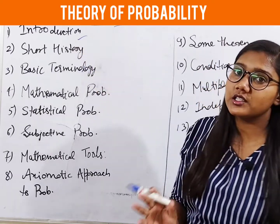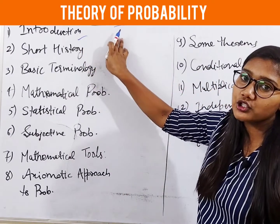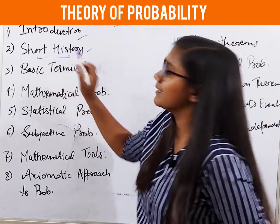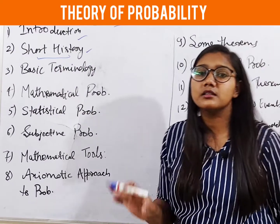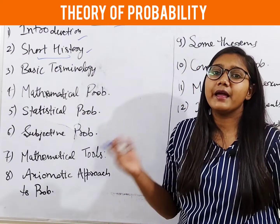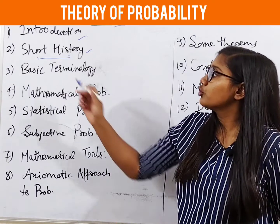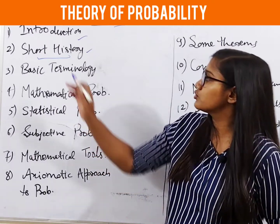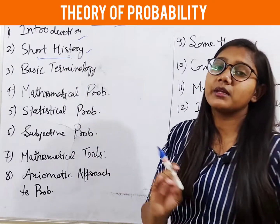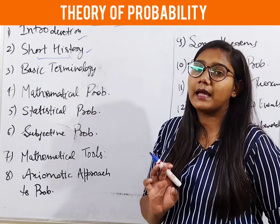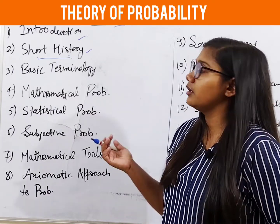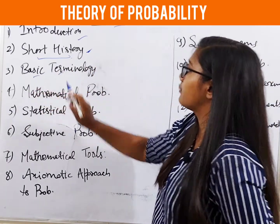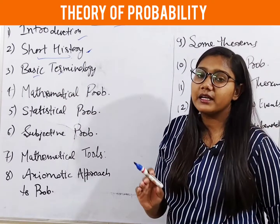The second topic is the short history — we will skip this topic. The next topic is Basic Terminology. Terminology means the basic words used in probability.